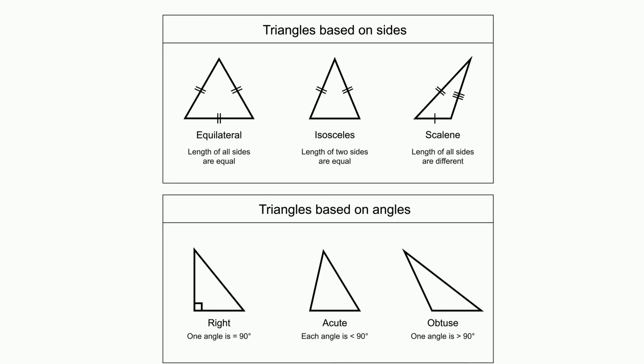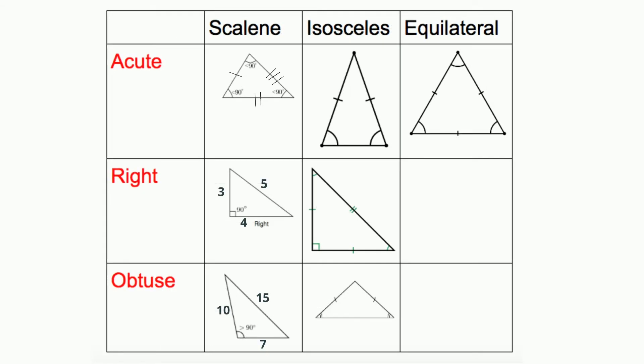You can also classify triangles by the side length and angle measure. This chart summarizes triangles classified by side length and angle measure. A scalene triangle, remember it has three different side lengths, can be acute, right, and obtuse.